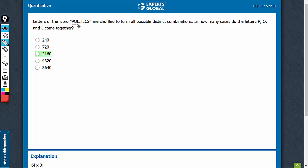P, O and L come together. So, P, O, L become one entity and the other five, I, T, I, C, S. These are five entities. This is one entity.